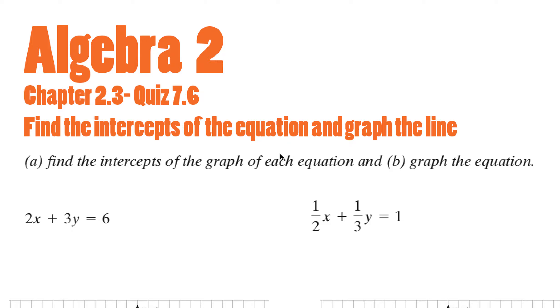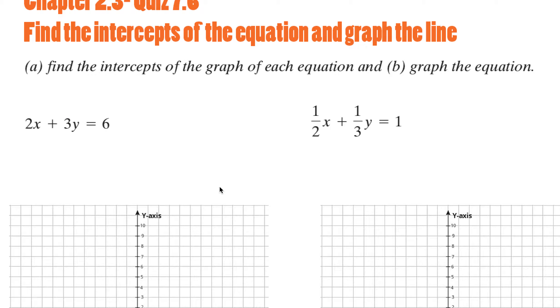Chapter 2.3 quiz 7.6. The instructions are to find the intercepts of the graph of each equation and graph the equation. Now what are the intercepts? Well, there's two intercepts in a line: the x-intercept and the y-intercept.